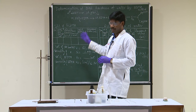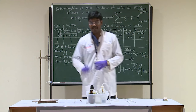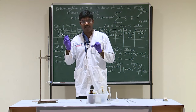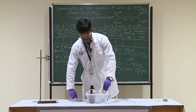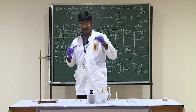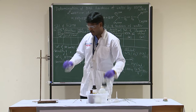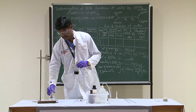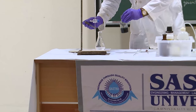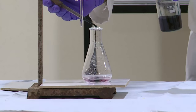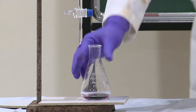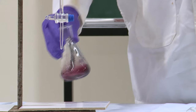The first titration is the standardization of EDTA. Take a conical flask and pipette out 20 ml of standard hard water. I have already pipetted it out. Add 5 ml of buffer solution — it is also added already. Now I am going to add the indicator, Eriochrome Black T — just add 2 drops. The metal-EBT complex has been formed and you can see the wine red color.